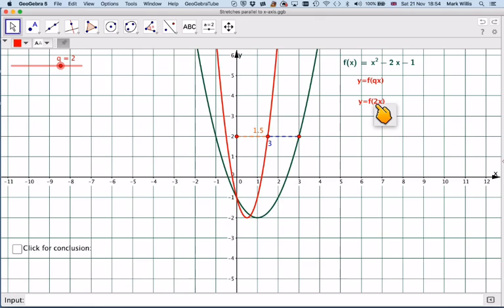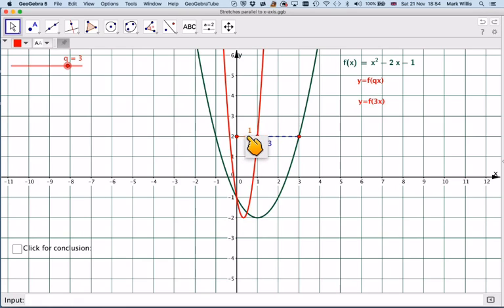If I change it to 3, then I can see it is now 1/3 of the way from the x-axis to that point. So it's 1 over 3, and here it says 3, so it's going to be sort of counterintuitive.